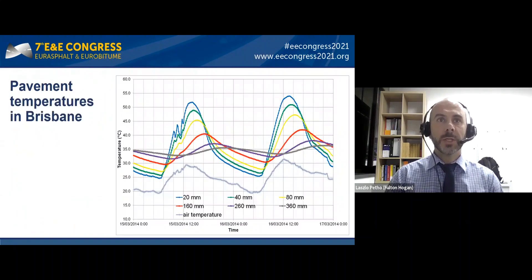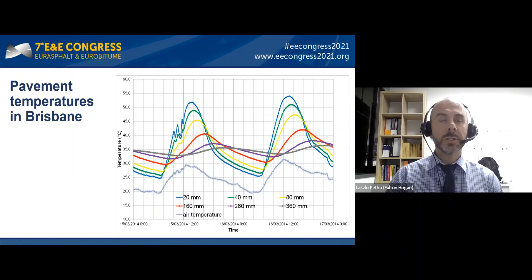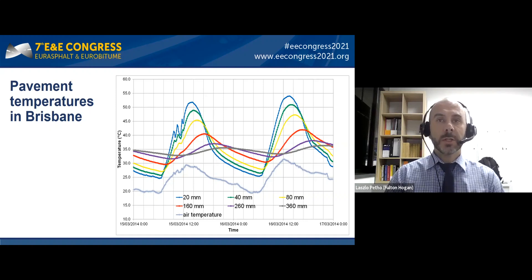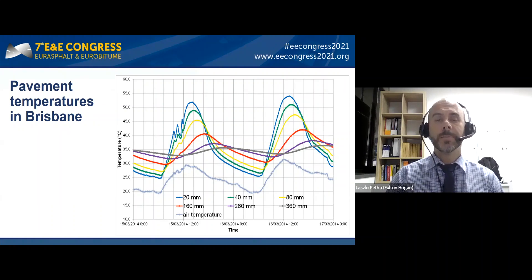This is linked with high pavement temperatures in southeast Queensland — that's Brisbane or the Gold Coast. Even in autumn, on this chart you can see the autumn temperature distribution in the pavement. On the top 20 millimeters you will still get 50 to 55 degrees even in the middle of autumn, so we are dealing with hot temperatures throughout the whole year.